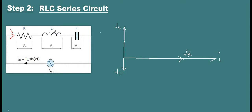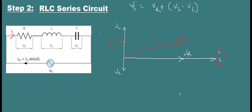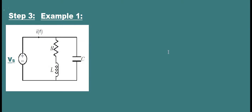For VC, it will lag I by 90 degrees. The total resultant voltage VS equals VR plus VL minus VC. So VL minus VC will be at a certain position, and the resultant value is found by adding VR and (VL minus VC). This resultant is our total voltage VS, and this is our current I.